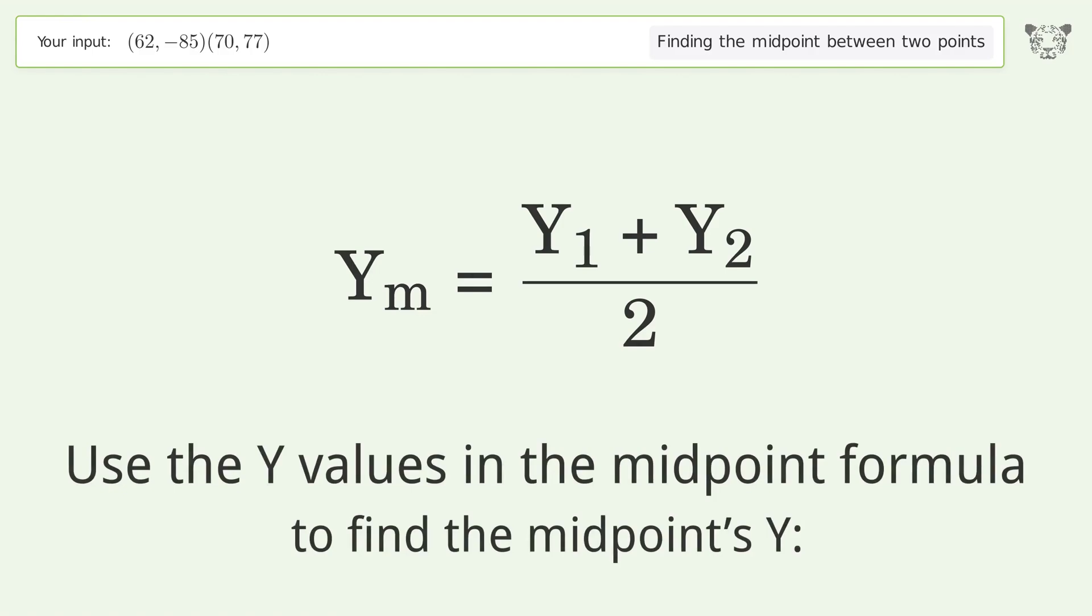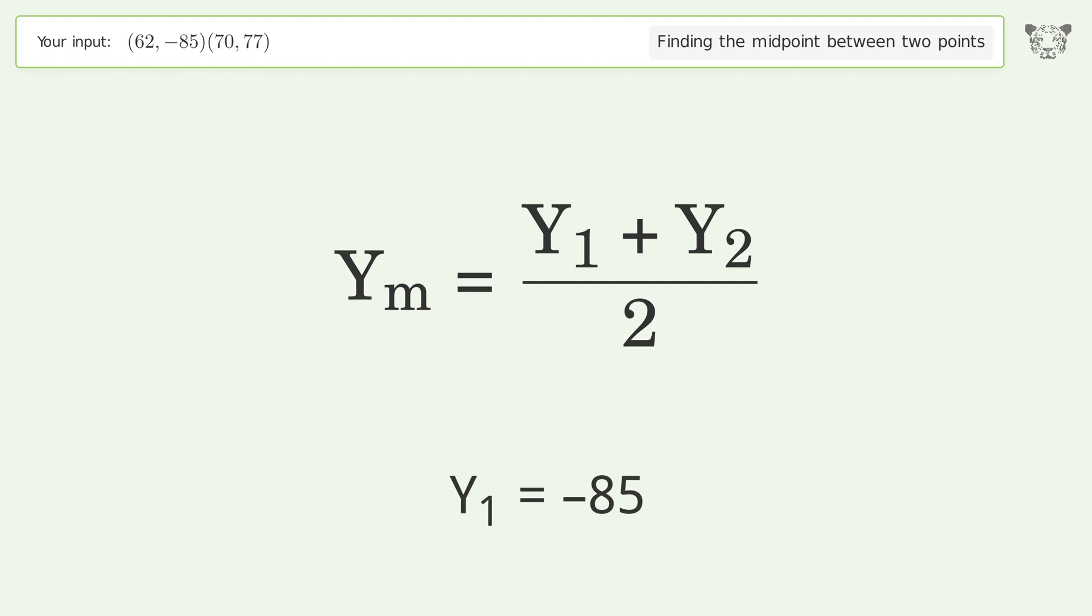Use the y values in the midpoint formula to find the midpoint's y: y₁ = -85, y₂ = 77.